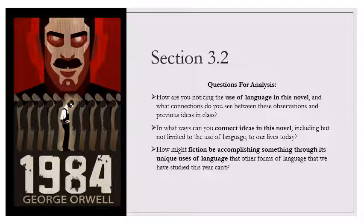He was starting up from the plank bed in the half certainty that he had heard O'Brien's voice. All through his interrogation, although he had never seen him, he had had the feeling that O'Brien was at his elbow, just out of sight. It was O'Brien who was directing everything. It was he who set the guards onto Winston and who prevented them from killing him. It was he who decided when Winston should scream with pain, when he should have a respite, when he should be fed, when he should sleep, when the drugs should be pumped into his arm. It was he who asked the questions and suggested answers. He was the tormentor, he was the protector, he was the inquisitor, he was the friend.